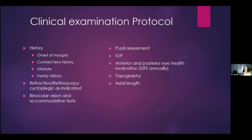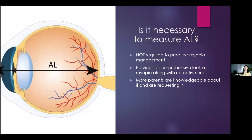Is it necessary to measure axial length? It is not required at all to practice myopia management. I'll be honest — I didn't have a biometer for several years into myopia management. But the CLEAR study found that axial length growth in children who remain emmetropic was steady from ages six to the early teenage years at approximately 0.1 millimeters per year, but for future myopes in the year before onset, many grew on average by a third of a millimeter. So you get axial growth before you get a change in refractive error toward myopia — meaning you can catch them prior to becoming myopic.